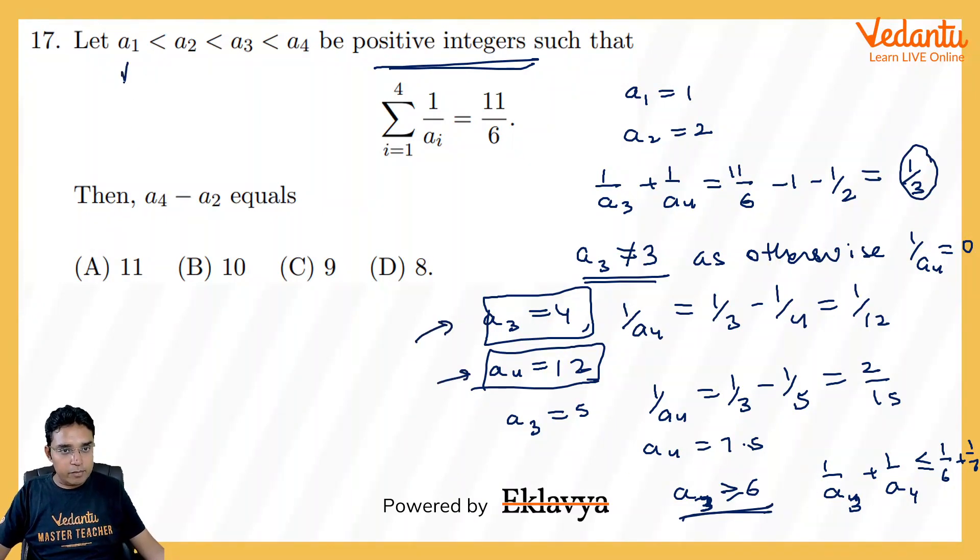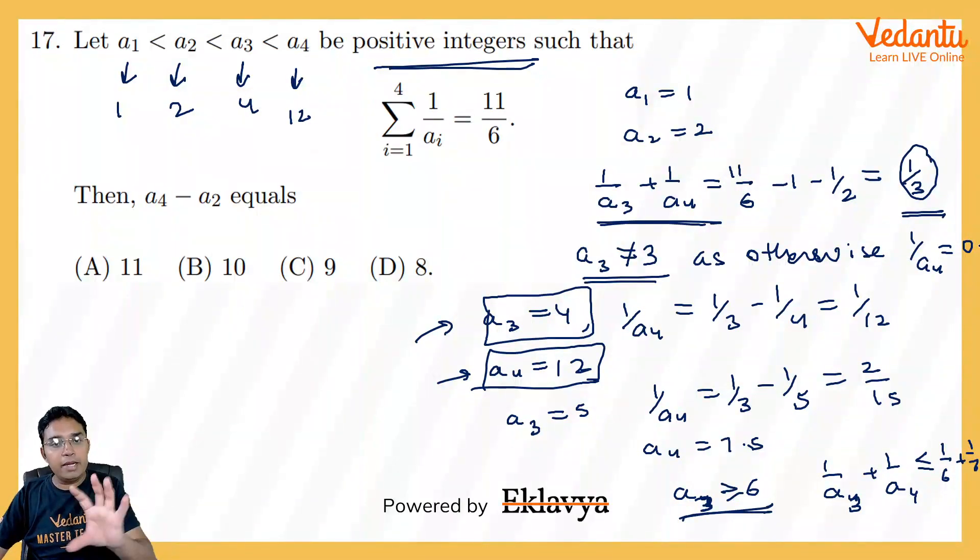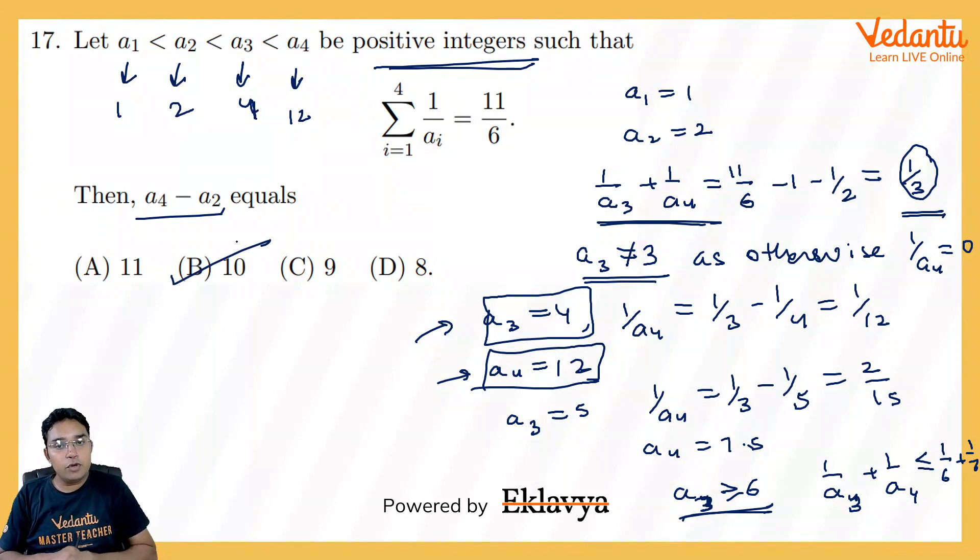So I am saying that a1 will be 1, a2 will be 2, a3 will be 4, and a4 will be 12. In fact, after this step, this Diophantine equation can also be used by taking LCM and writing product of 2 integers. That way also it can be done, and you can see these will be the only possible solution. So here a4 minus a2 has to be 10. That is the answer for this question.